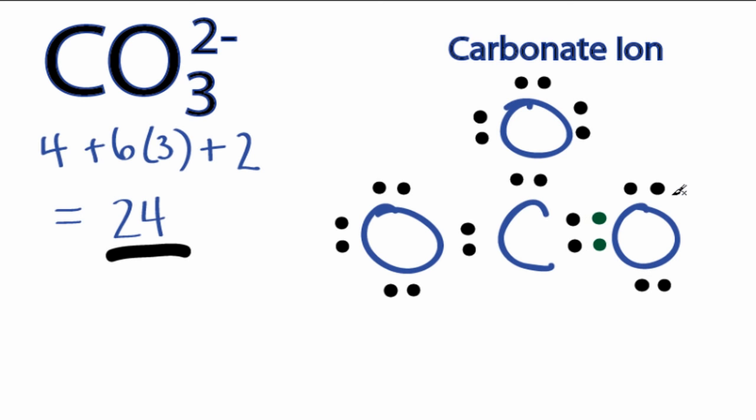Let's move 2 valence electrons from here to form a double bond with the carbon. So this oxygen still has 8 valence electrons, but now the carbon has 8 valence electrons, and we're still using only 24 valence electrons.